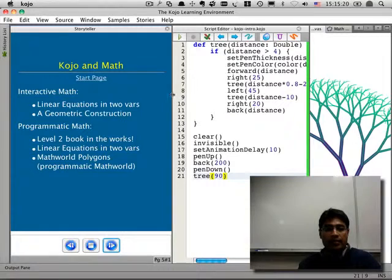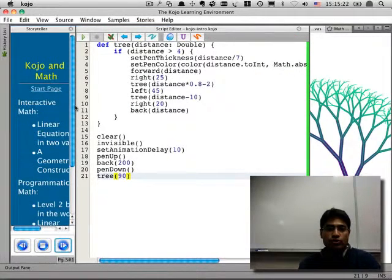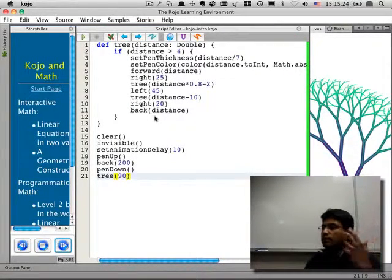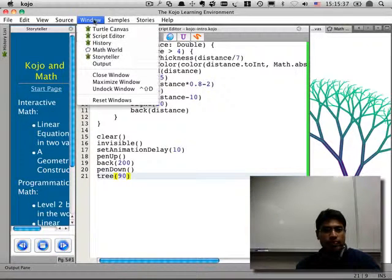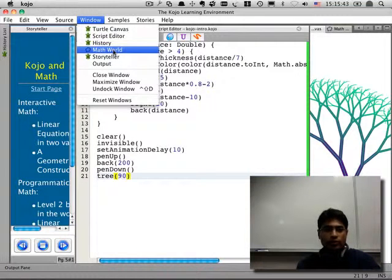Another kind of thing that you can do within Kojo is to play with mathematical concepts. Kojo has a virtual laboratory for mathematics built inside it and you can go into that laboratory and play with mathematical ideas. You get to that laboratory by going to Math World under the window menu.